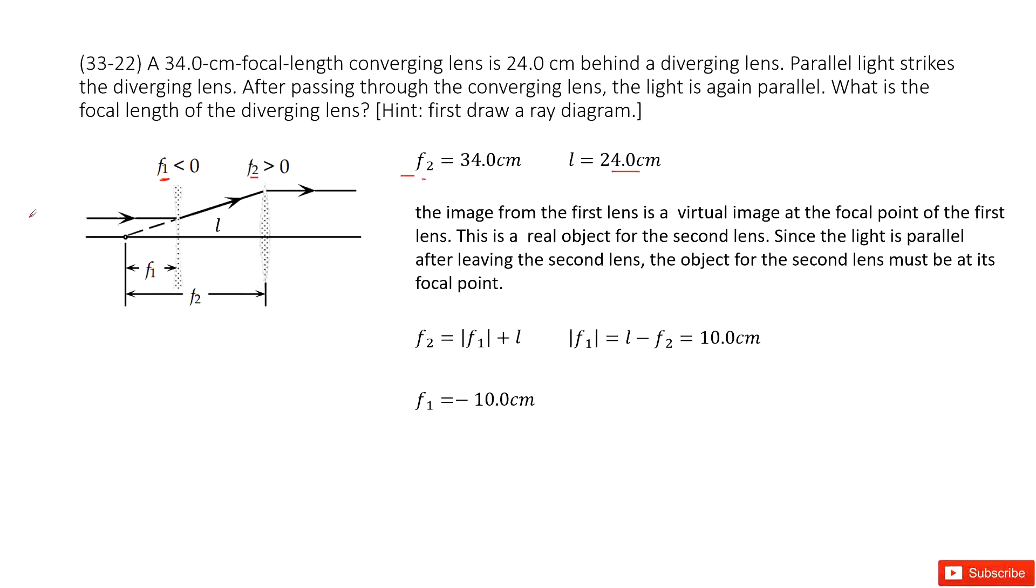As the first one we know, if the parallel light goes to divergent lens, the image should be at the focal point there. This is an image for F1. See, it is there.